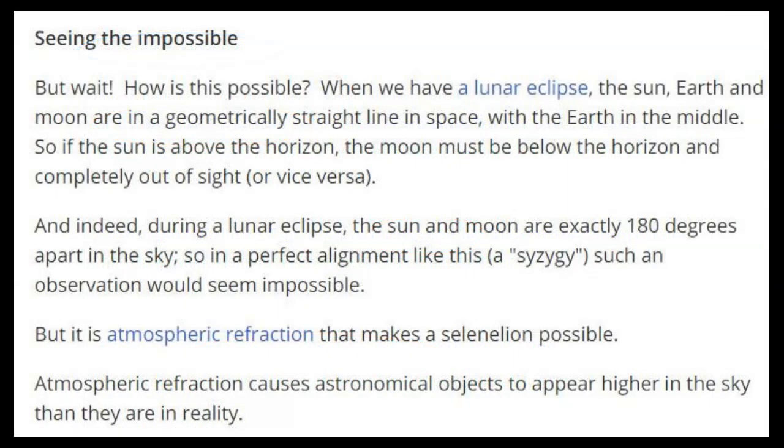And this is what that space.com article says. But wait, how is this possible? When we have a lunar eclipse, the sun, earth, and moon are in a geometrically straight line in space with earth in the middle. So if the sun is above the horizon, the moon must be below the horizon and completely out of sight, or vice versa.